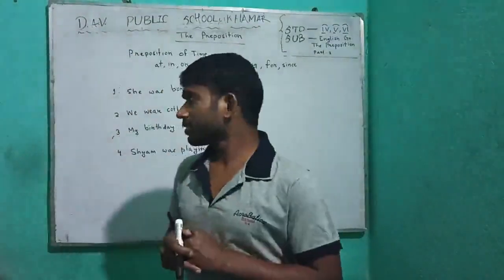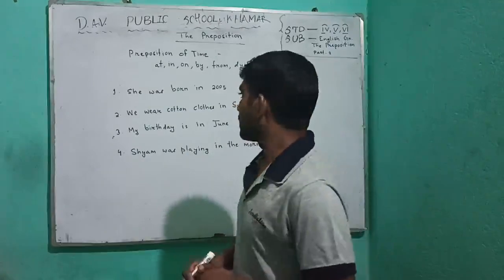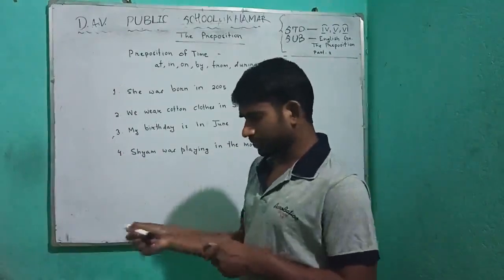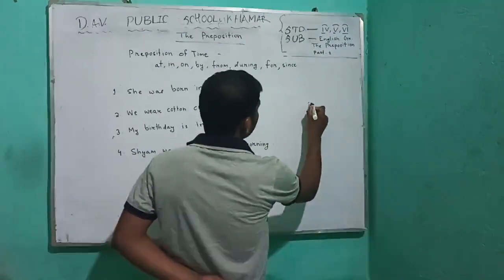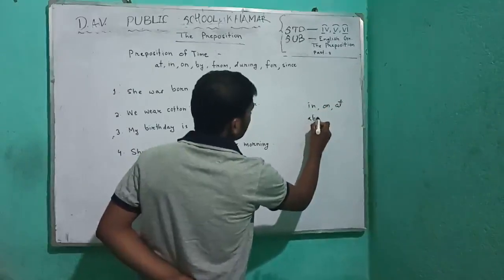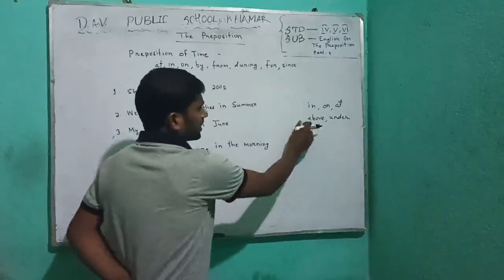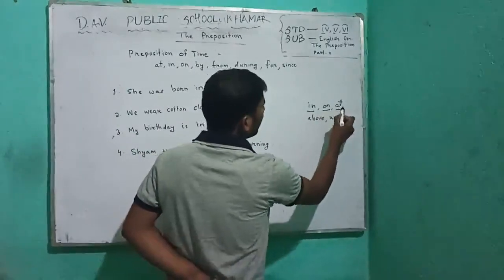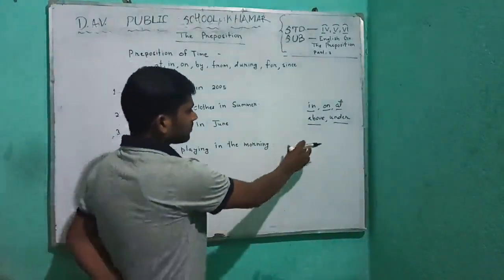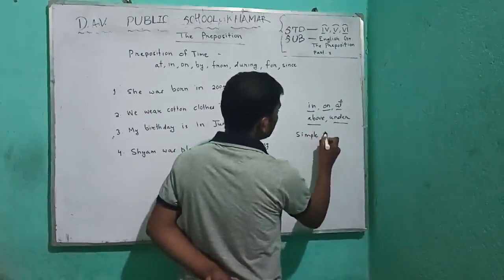We know that a preposition may consist of one word or a group of words. For example: in, on, at, above, under. These are the one-word prepositions, and they are called simple prepositions.